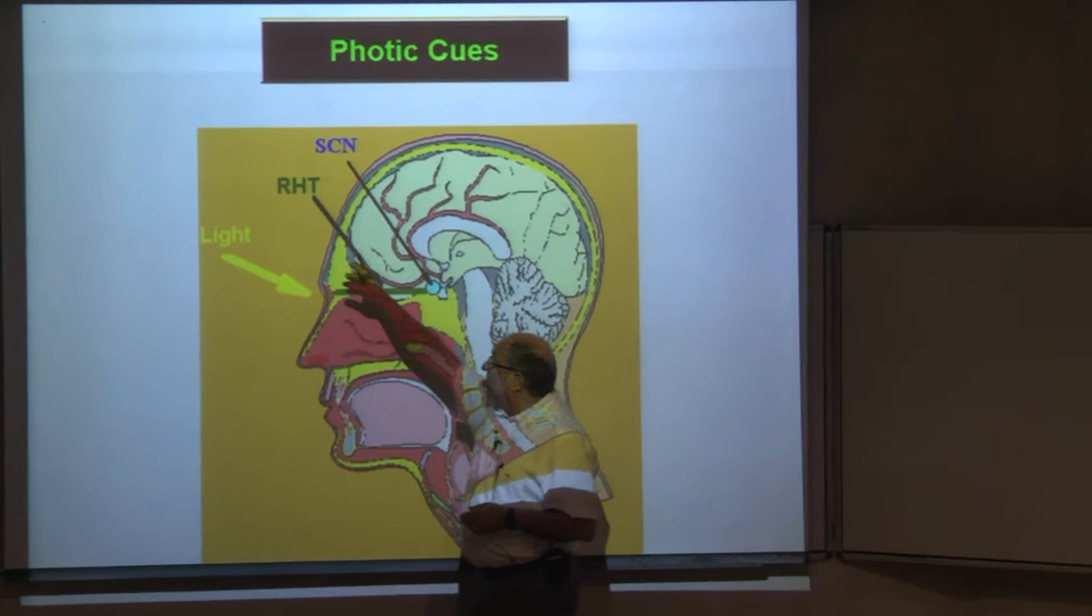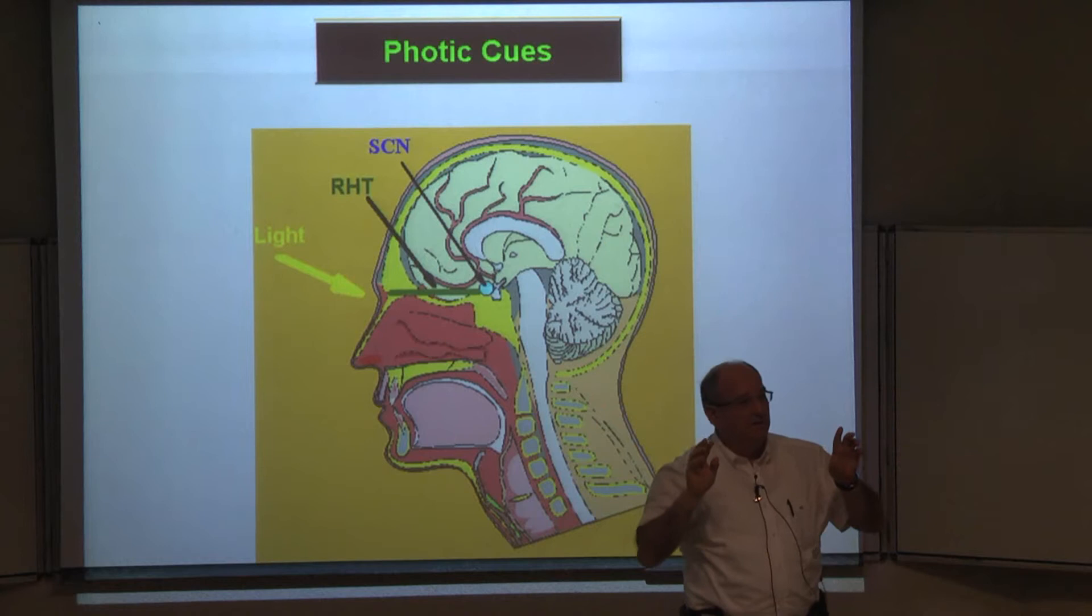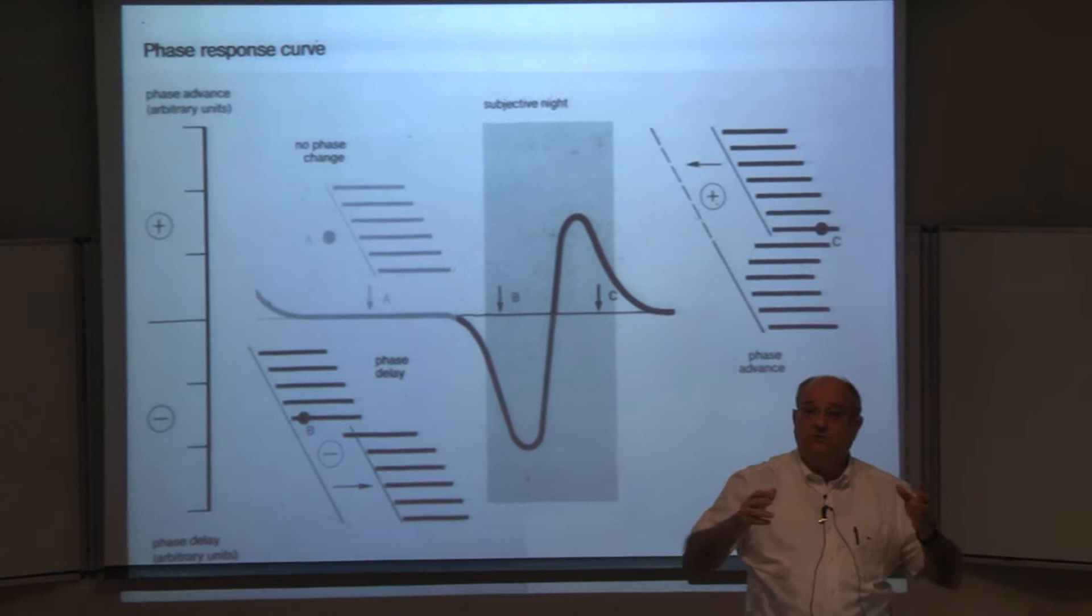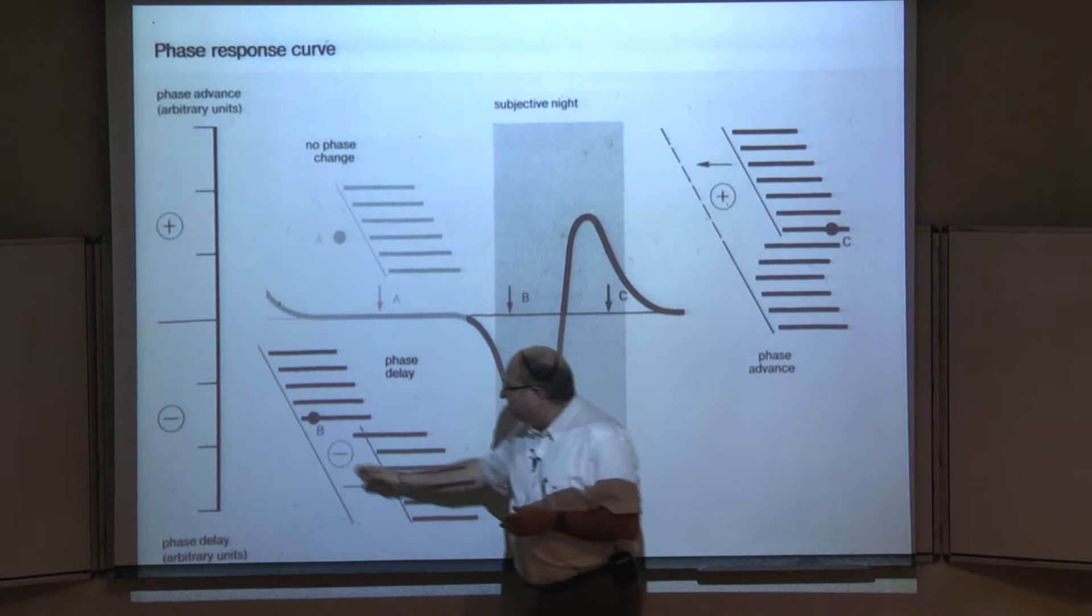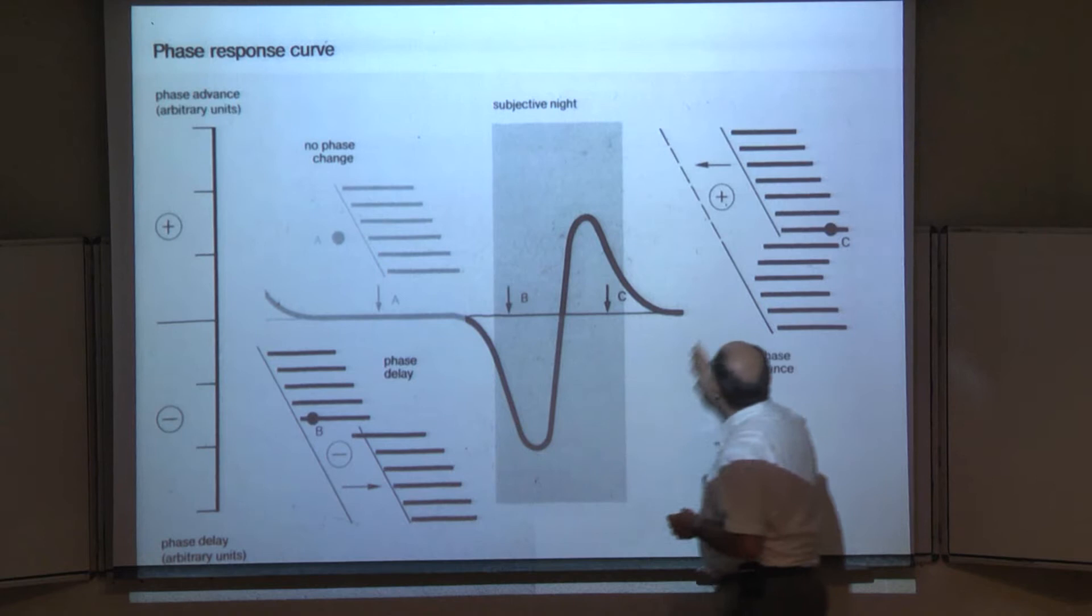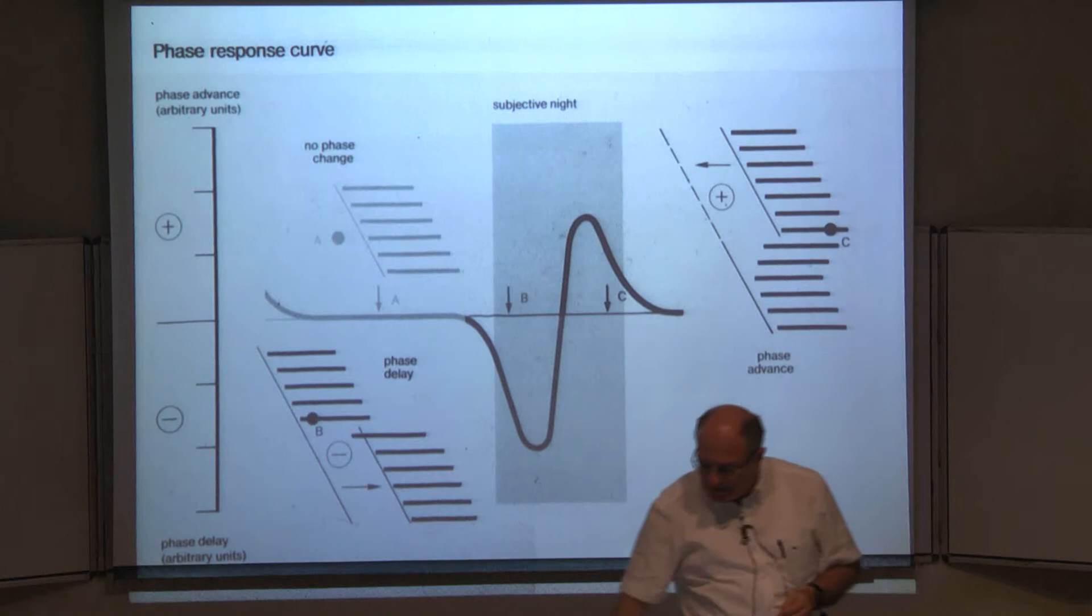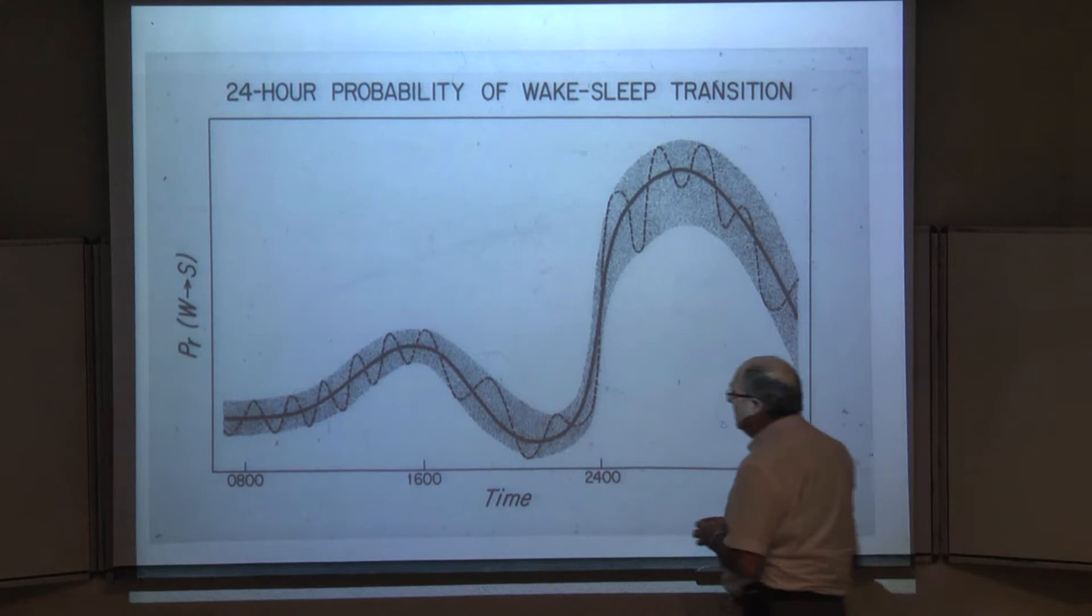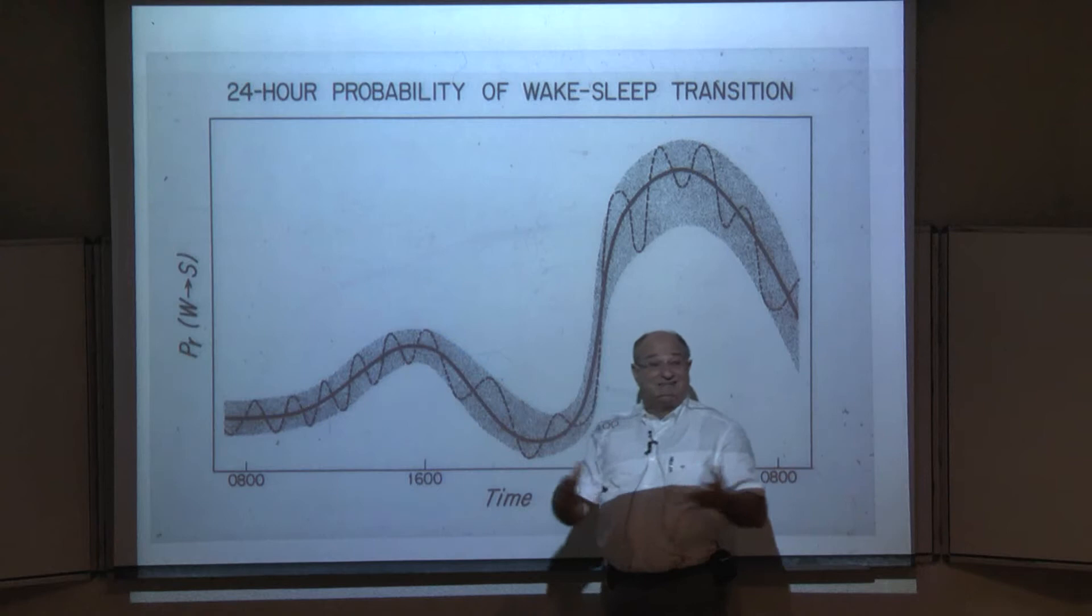The sleep-wake cycle is controlled by the suprachiasmatic nucleus and entrained by light. When we are exposed to the alternating day-night cycle, we entrain the sleep-wake cycle. When light shines at the beginning of sleep, we delay the next day's sleep cycle. When light shines at the end of sleep, we advance the cycle. So on both ends of the sleep periods, we entrain it into 24 hours.